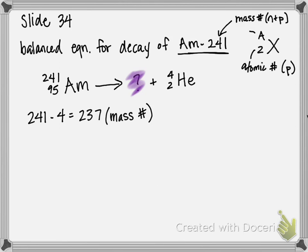The third step is to figure out the missing atomic number — the number on the bottom. We have to figure out what plus 2 gives me 95, so we take 95 minus 2 to get 93. That's our missing atomic number. Basically, the top numbers add up together and the bottom numbers add up together, so they're determined separately.